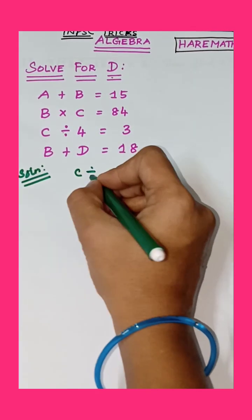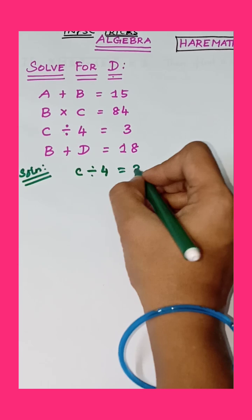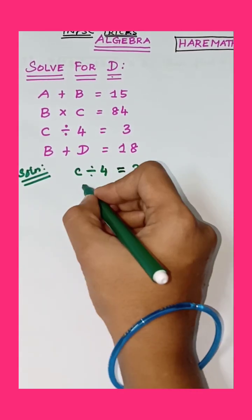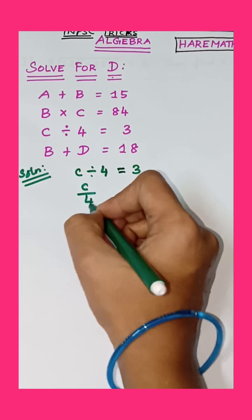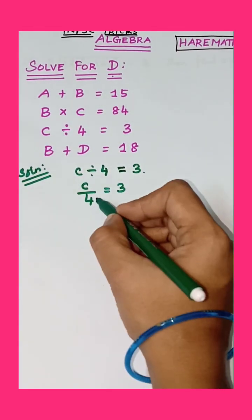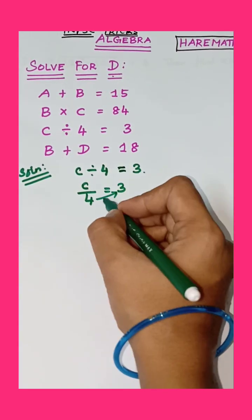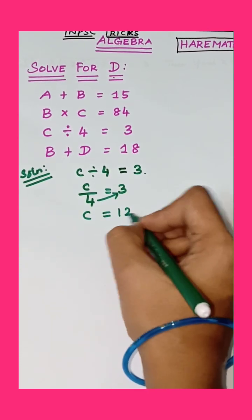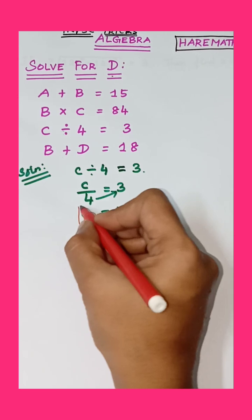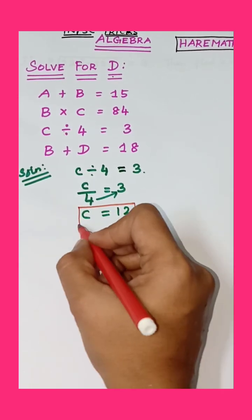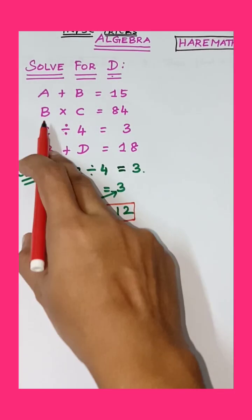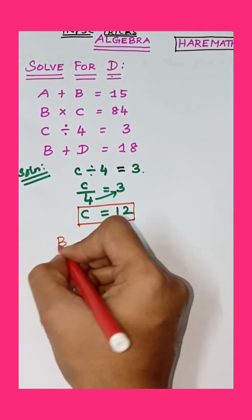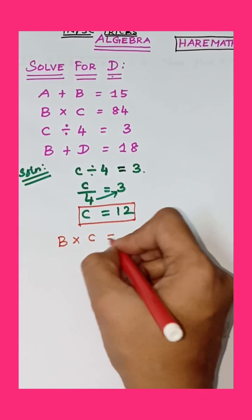C divided by 4 equals 3. Cross multiply: C equals 4 times 3 equals 12. C equals 12. C value is 12.